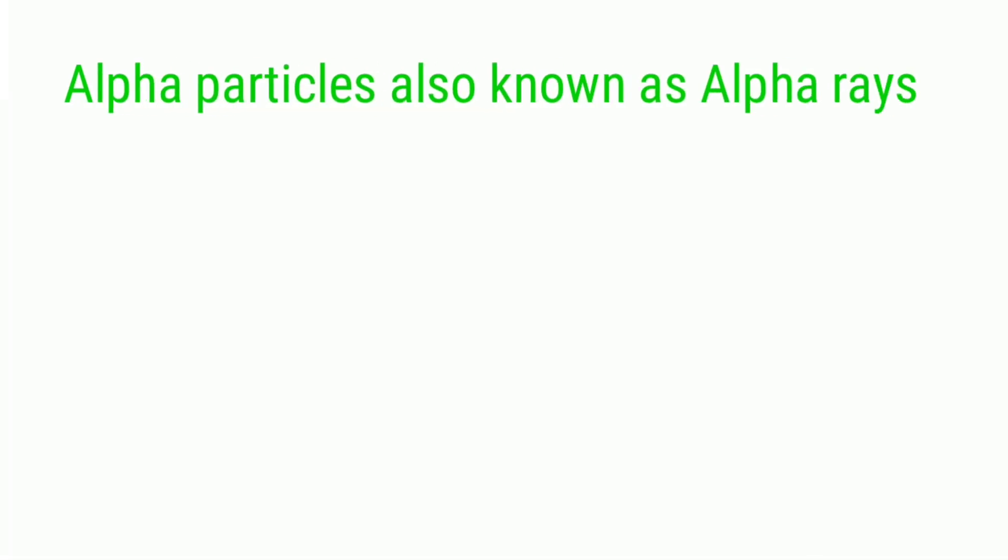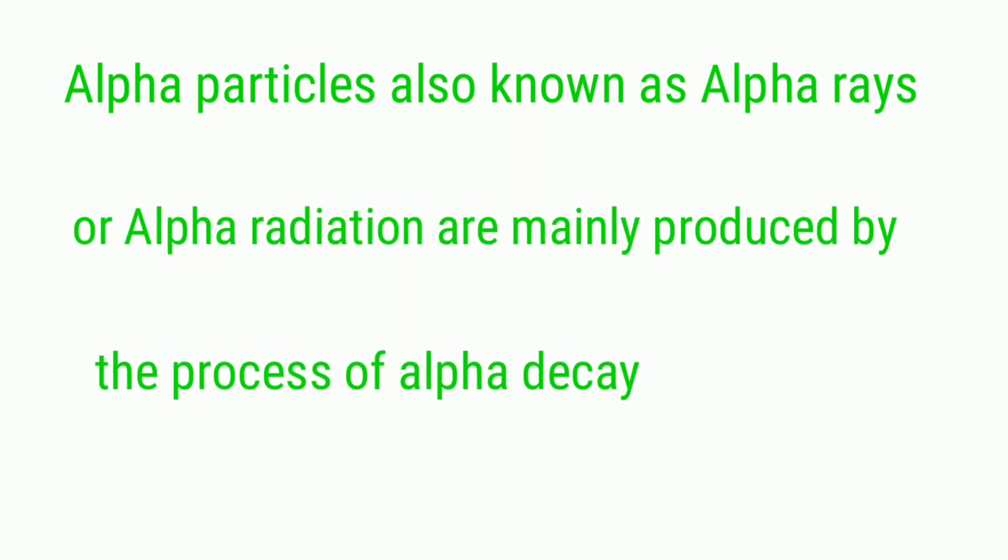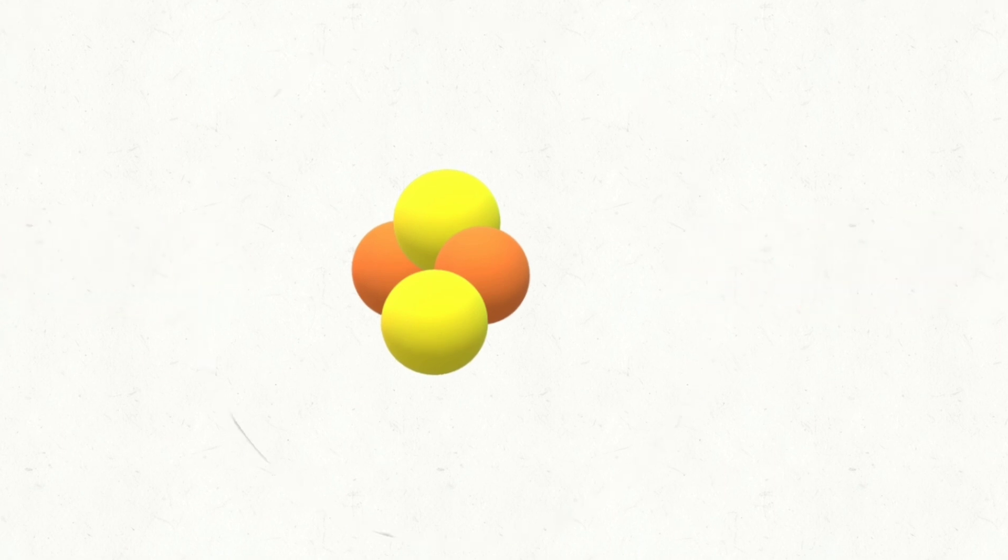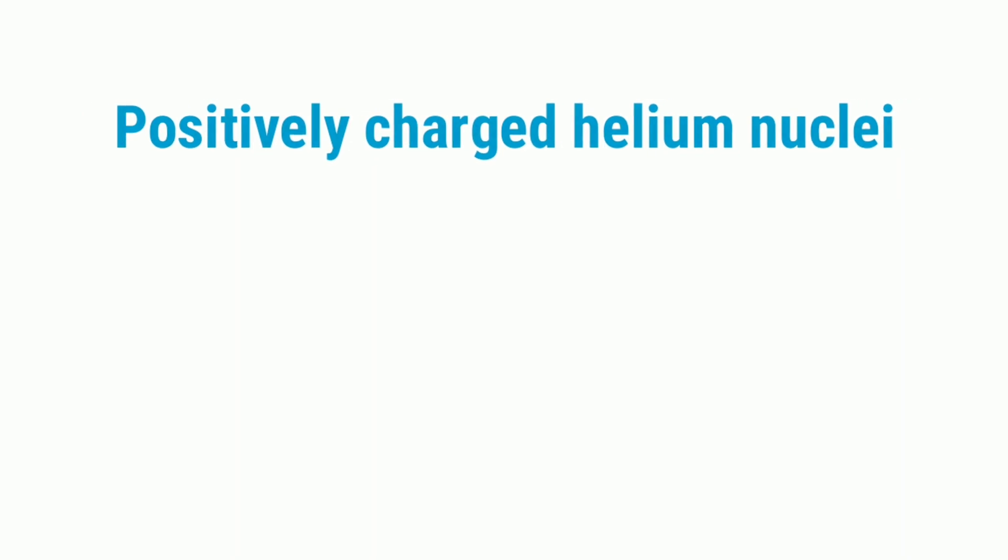Alpha particles, also known as alpha rays or alpha radiation, are mainly produced by the process of alpha decay. In this process, the two electrons of helium atoms are discharged leaving behind the positively charged helium nuclei. This positively charged helium nuclei is alpha particles.